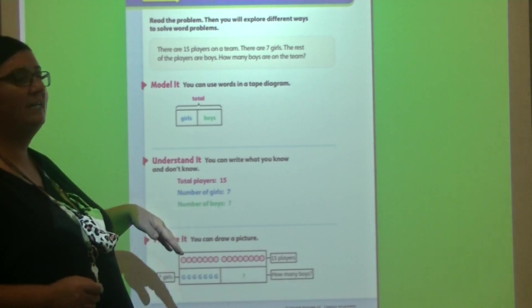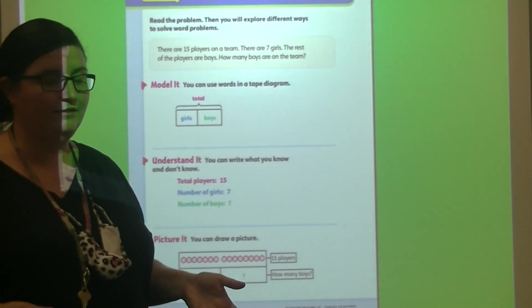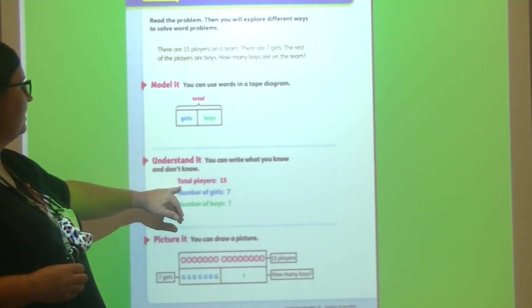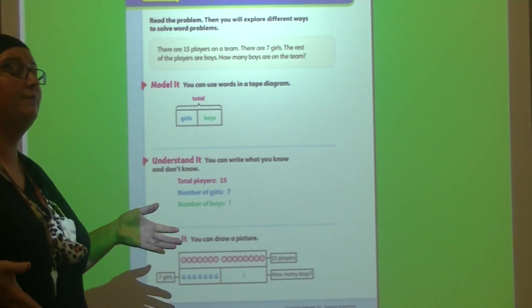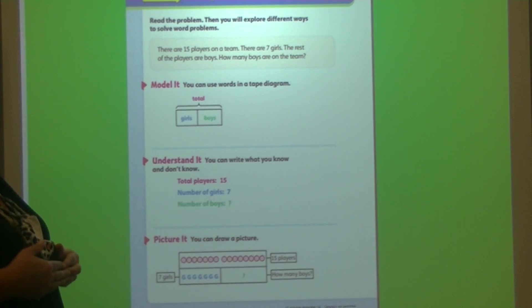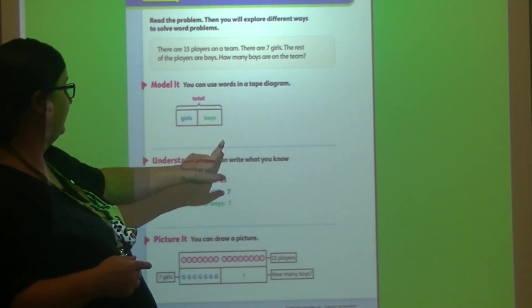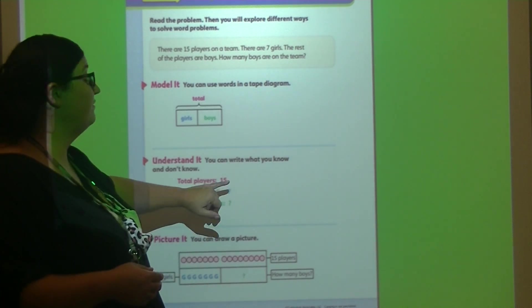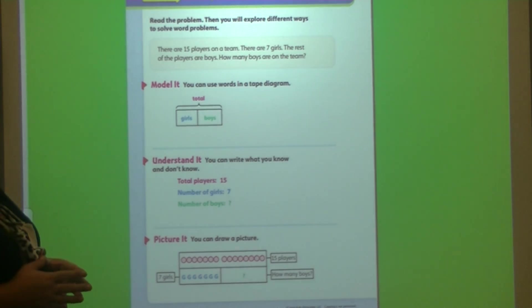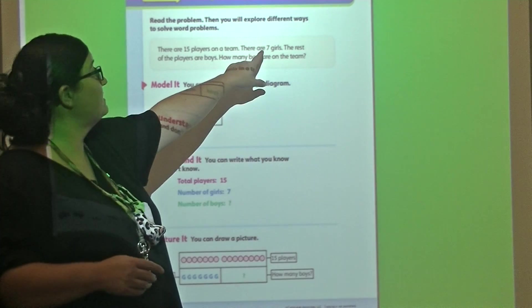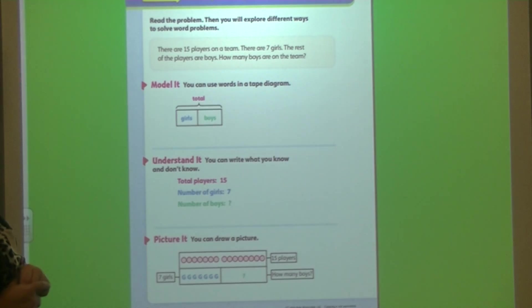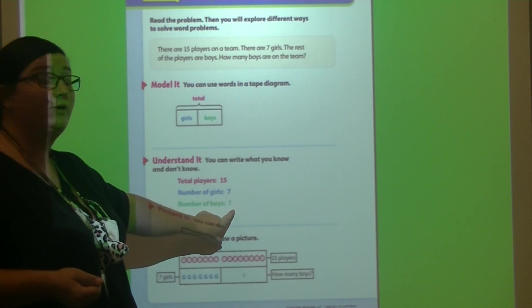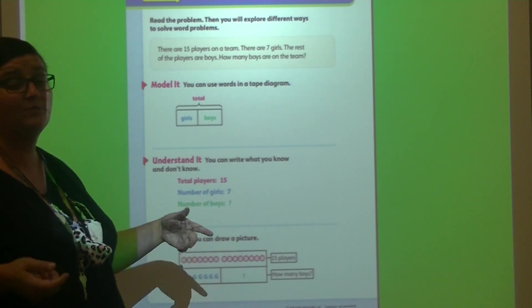Alright, understand it. That's where we put all the information that we already know in, and we can figure out what we need to solve. So we already know the total number of players, boys or girls. How many players are on the team? It tells us there are 15. We already know the number of girls. How many girls were on the team? There were 7 girls on the team. We know the rest are boys. We don't know how many. So that is the number we need to solve for. There's a question mark there because we don't know how many boys.